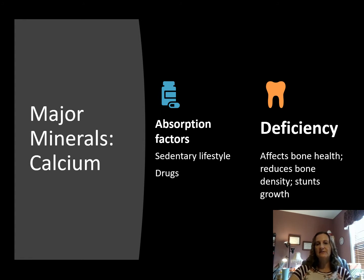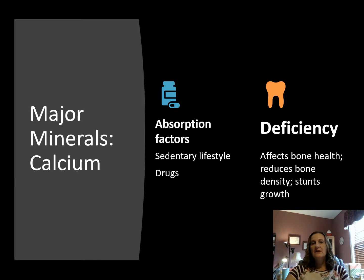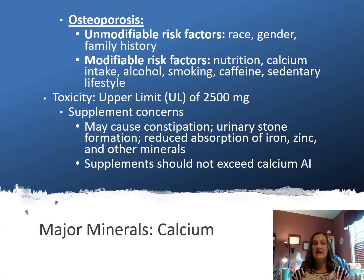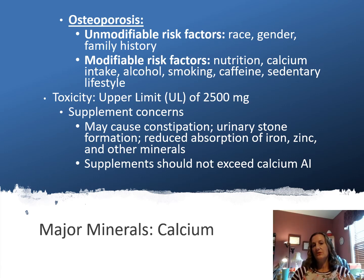Calcium deficiency reduces bone mineral density. In children during growth spurts, any calcium deficiency can result in stunted growth. Reduced calcium blood and bone levels will result in osteoporosis. Modifiable risk factors — those the patient has control over — include increasing dietary calcium, eating a nutrient-dense diet, decreasing alcohol intake, smoking cessation, and reducing caffeine and sedentary lifestyle.